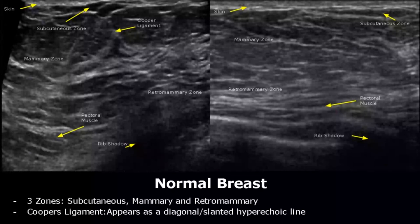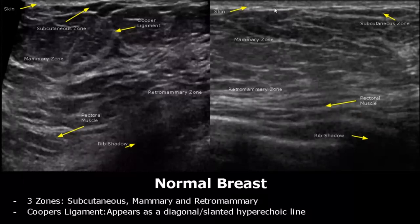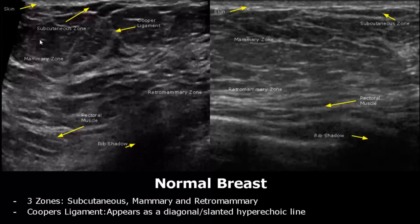Hello everyone, this is Dr. Sam and today we will study breast ultrasound image appearances. Here we have images of a normal breast. The uppermost layer is the skin, which is the hyperechoic layer. Below that is the subcutaneous zone, which is usually hypoechoic compared to the tissues below. The largest region is the mammary zone, which usually has mixed echogenicity. Most pathologies occur in this zone.